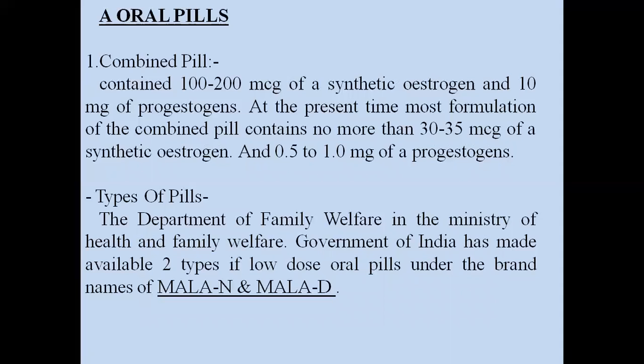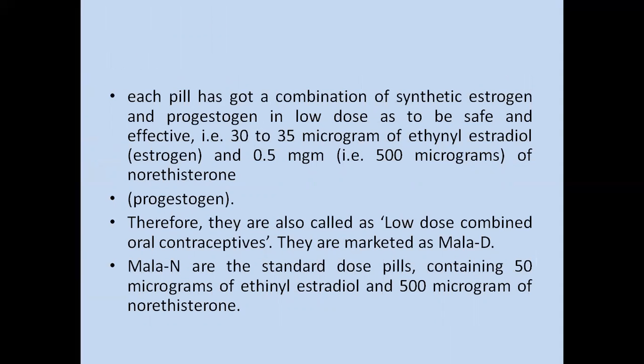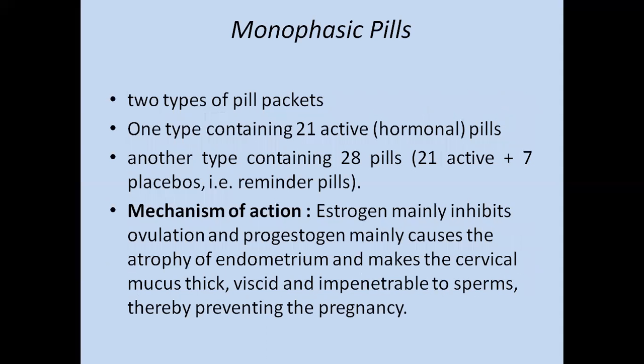The Department of Family Welfare in the Ministry of Health and Family Welfare, Government of India, has made available two types of low-dose oral pills under the brand names Mala-N and Mala-D. Each pill contains a combination of synthetic estrogen and progesterone — 30 to 35 micrograms of ethinyl estradiol and 0.5 mg of norethisterone. They are called low-dose combined oral contraceptive pills and marketed as Mala-D. Mala-N is the standard-dose pill containing 50 micrograms of ethinyl estradiol and 500 micrograms of norethisterone, representing a higher dose of both estrogen and progesterone.